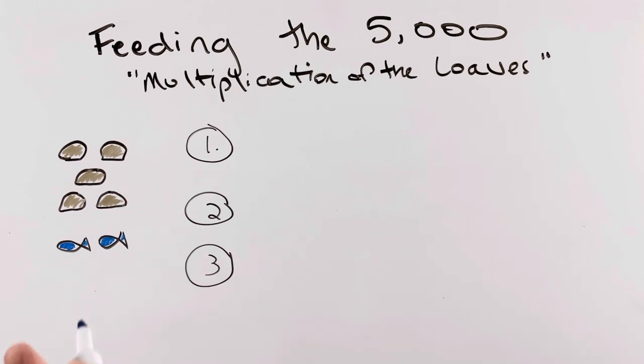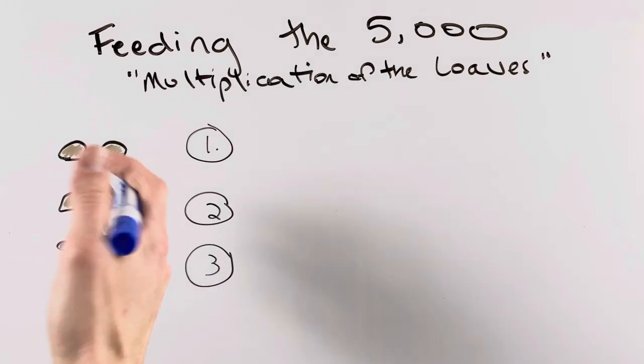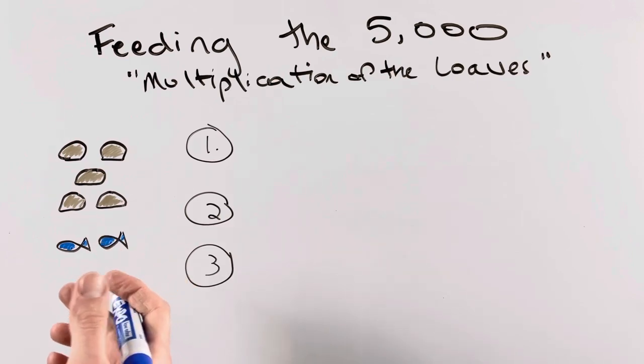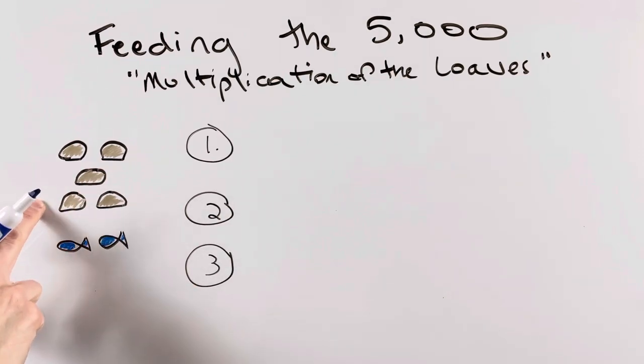A young boy has this food to feed thousands of people. And Jesus performs a miracle to break the bread and bless the bread and share it with all of the people there. So these five loaves of bread and two fish feed 5,000 people.